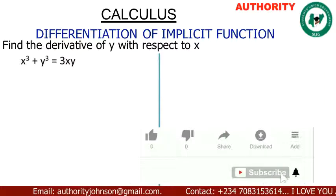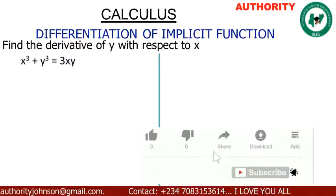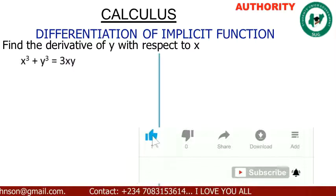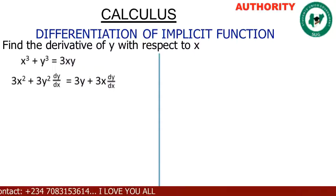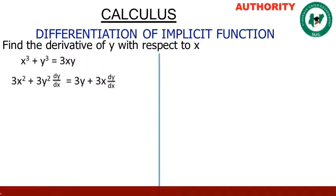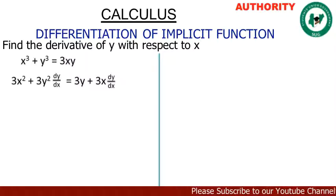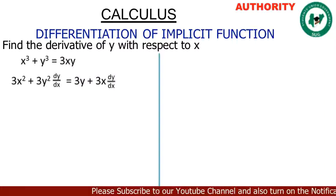Let's differentiate x cubed — that gives us 3x squared. Then for the differentiation of y: since we are differentiating with respect to x, we differentiate y as if it is x and then add dy/dx, because it is implicit.